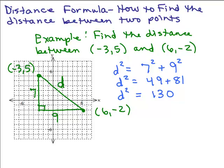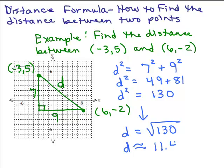That's the square of the distance. To find d, we take the square root of both sides. Since this is a distance it can't be negative, so d equals the square root of 130. That's exactly how long that side is and it can't be simplified. If you want to know approximately how long it is, get out a calculator and round to the nearest tenth — it's about 11.4. The hypotenuse is always longer than either leg but shorter than the sum of the two sides, so that seems reasonable. The exact answer is the square root of 130; the approximate distance rounded to the nearest tenth is 11.4.